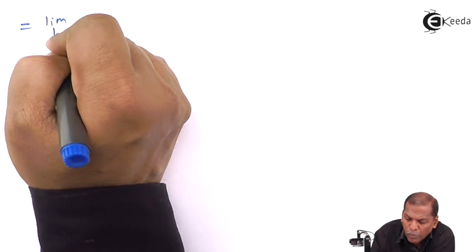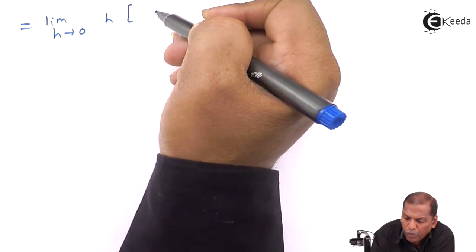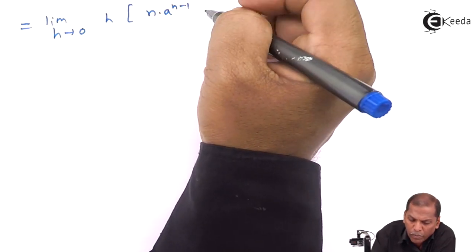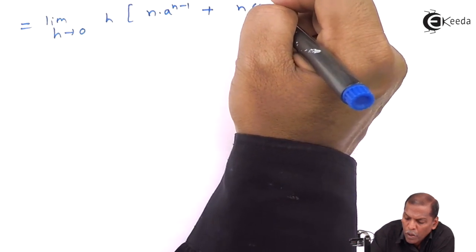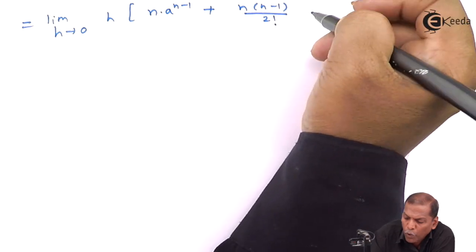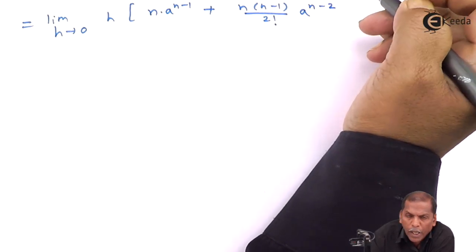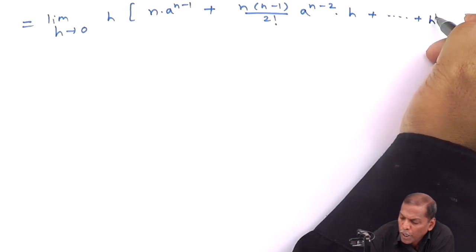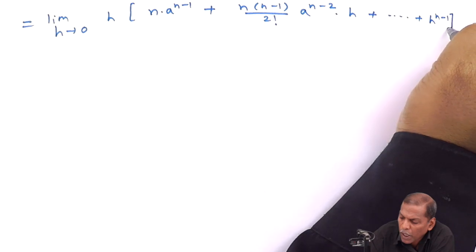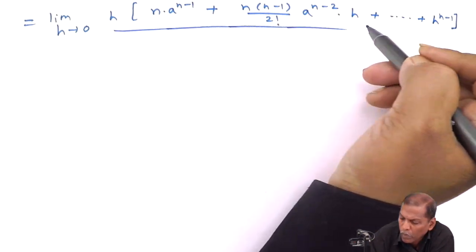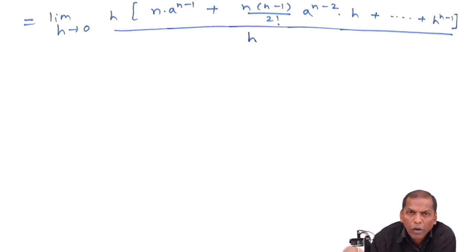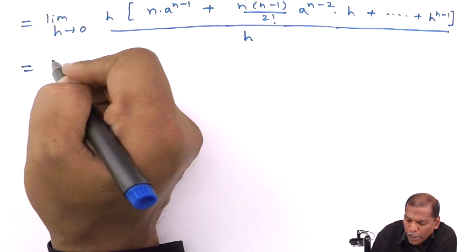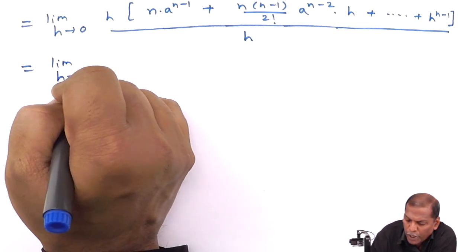So that equals limit h tends to 0 of h in bracket: n into a raised to n minus 1, plus n(n minus 1) upon 2 factorial into a raised to n minus 2 into h, plus going on, and the last term is h raised to n minus 1 — all divided by h.